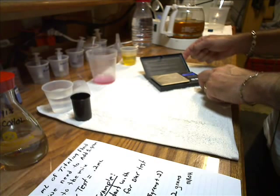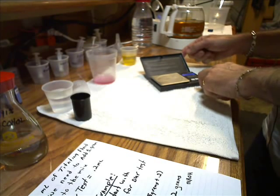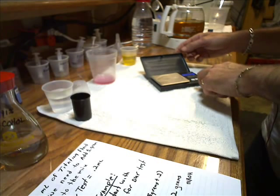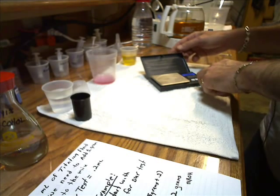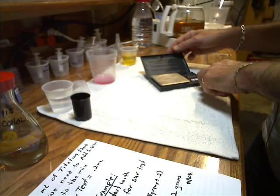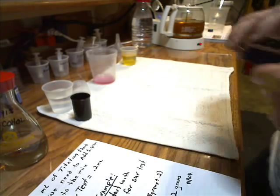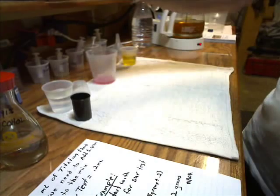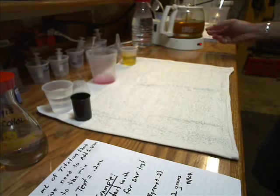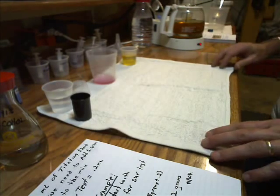The rule of thumb for your methyl alcohol is 20% of whatever you're doing. So if I'm doing 1 liter, I need 200 milliliters of methyl alcohol.